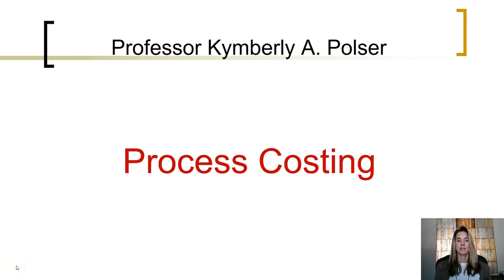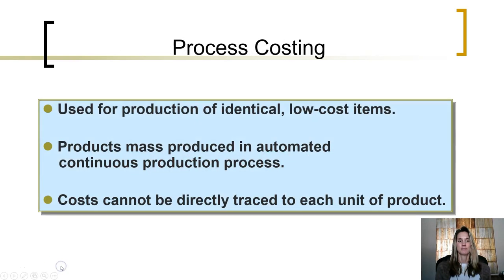In this episode, we will take a look at an overview of a process costing system. A process costing system is used for a manufacturer when accounting for cost when they are producing identical low cost items. Inventory items that are mass produced in an automated continuous production process make it difficult to trace costs directly to each inventory item.